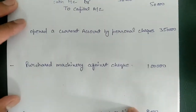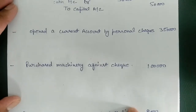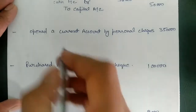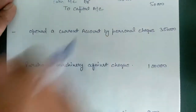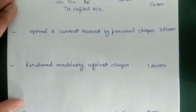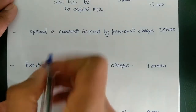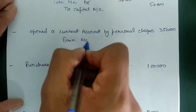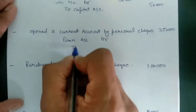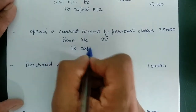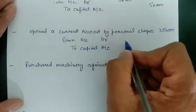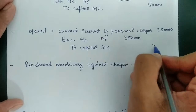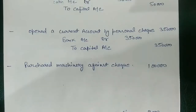The next entry is opening a current account by a personal check. Again, the owner brought cash of 350,000 into the firm, but this time through the bank because he is opening a current account. So the entry will be: bank account debit to capital account, amount 350,000.